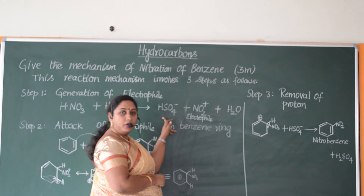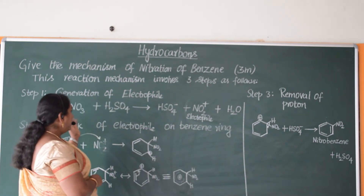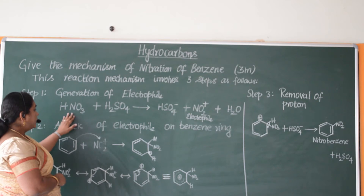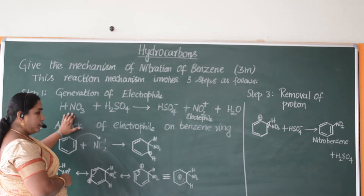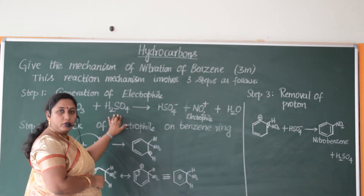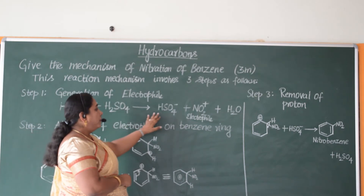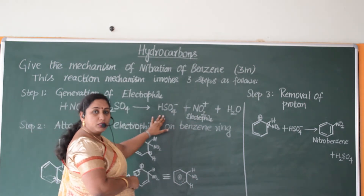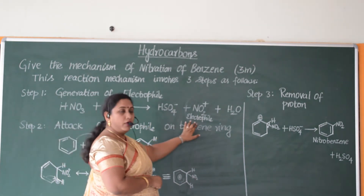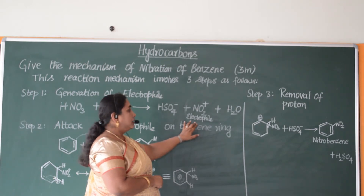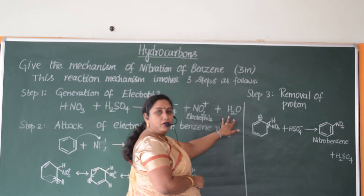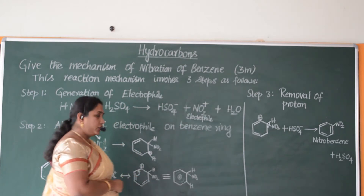The equation is as follows: HNO3 combines with H2SO4, forming HSO4⁻ (the nucleophile), then the electrophile NO2⁺ along with the formation of water. This is our first step.